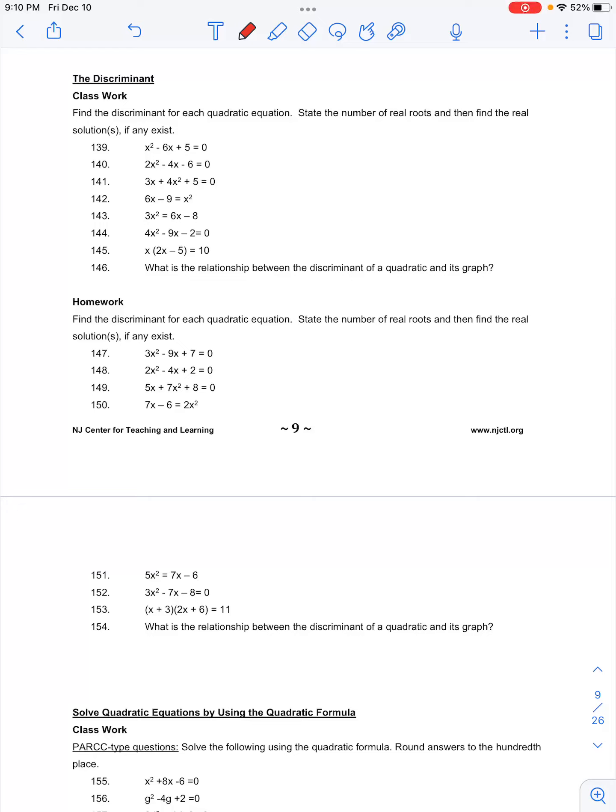Number 146 in the classwork for quadratic equations asks for the relationship between the discriminant of a quadratic and its graph. When we have a graph and this quadratic formula given by negative b over 2a plus or minus the discriminant over 2a,